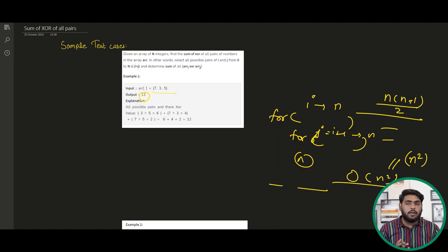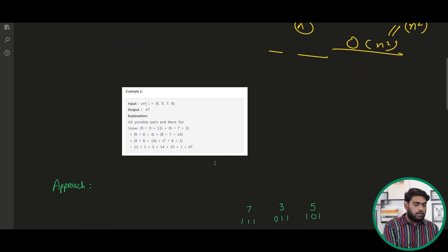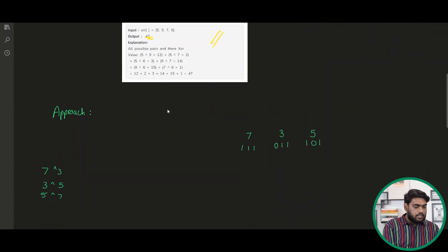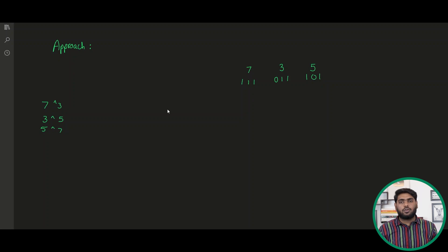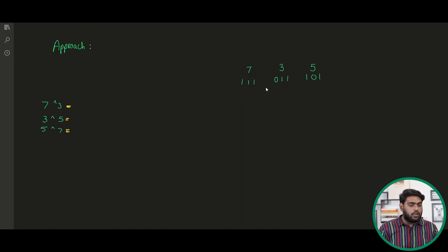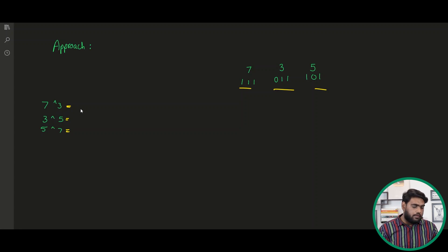We need to figure out a better approach. Let me give you a glimpse of the analysis. We have the same example with 7, 3, 5. I have written their binary representations and listed the possible pairs, finding XORs: 7 XOR 3 = 4, 3 XOR 5 = 6, 7 XOR 5 = 2.